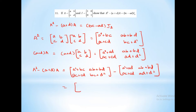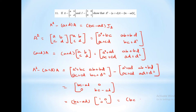So A squared minus (a plus d) times A equals a² plus bc, ab plus bd, ac plus cd, bc plus d² minus a² plus ad, ab plus bd, ac plus cd, ad plus d². The a² terms cancel, ab plus bd terms cancel, ac plus cd terms cancel, d² terms cancel, giving bc minus ad, 0, 0, bc minus ad, which equals bc minus ad times 1, 0, 0, 1, which equals bc minus ad times I₂. Hence proved.